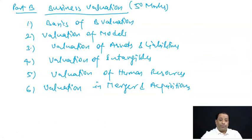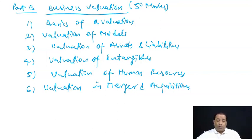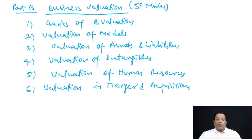The second part, Business Valuation, contains 50 marks. We will cover the study module and past examination questions — 10 to 12 past examination questions — and certain different questions in upcoming classes. Business Valuation contains more practical and less theoretical part — practical part ज़्यादा है और theoretical part कम है। यह CMA Final का course है, बहुत interesting course है।